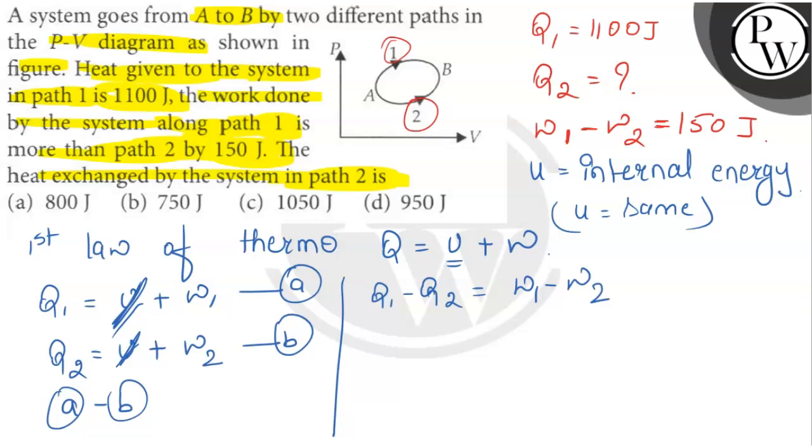For path 1, Q1 equals U plus W1. We have Q1 value as 1100 and W1 minus W2 is given as 150. So from here, 1100 minus 150 equals Q2, which means Q2 value will be 950 joules. This is our Q2 value.